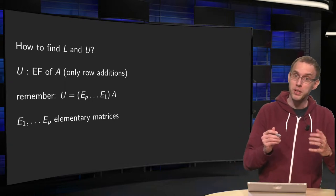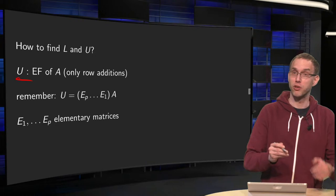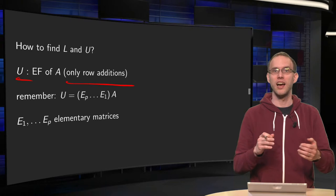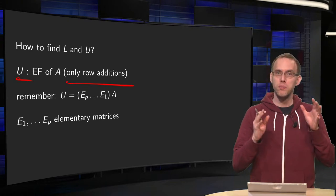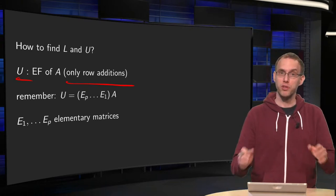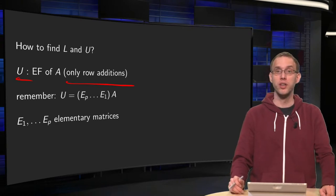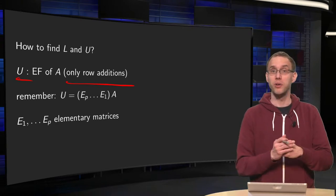U is easy. U is just an echelon form of A, where you use only row additions. You can generalize this by using swaps, but for this example we will use only row additions. When doing row reductions, you use mostly row additions anyway.